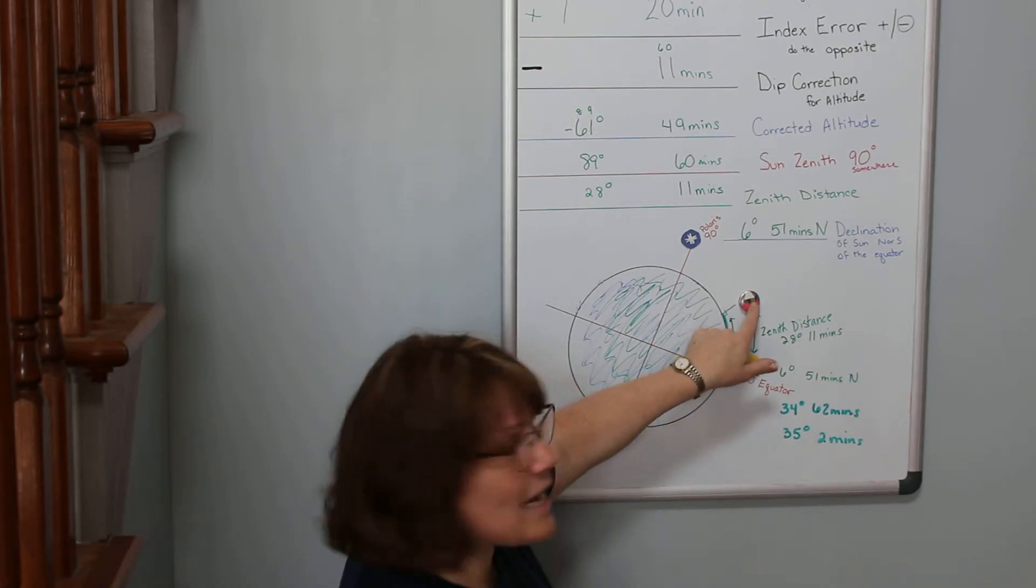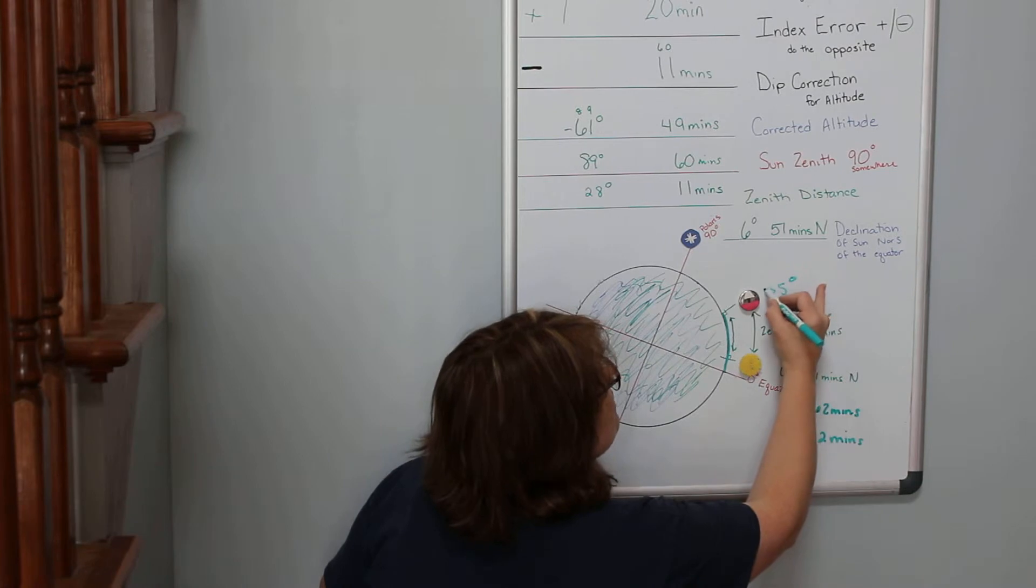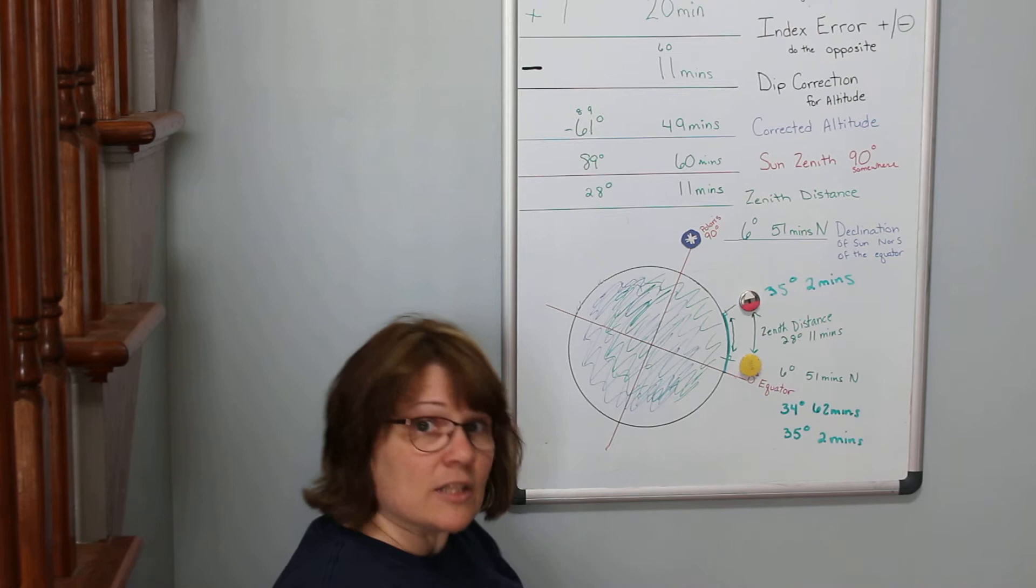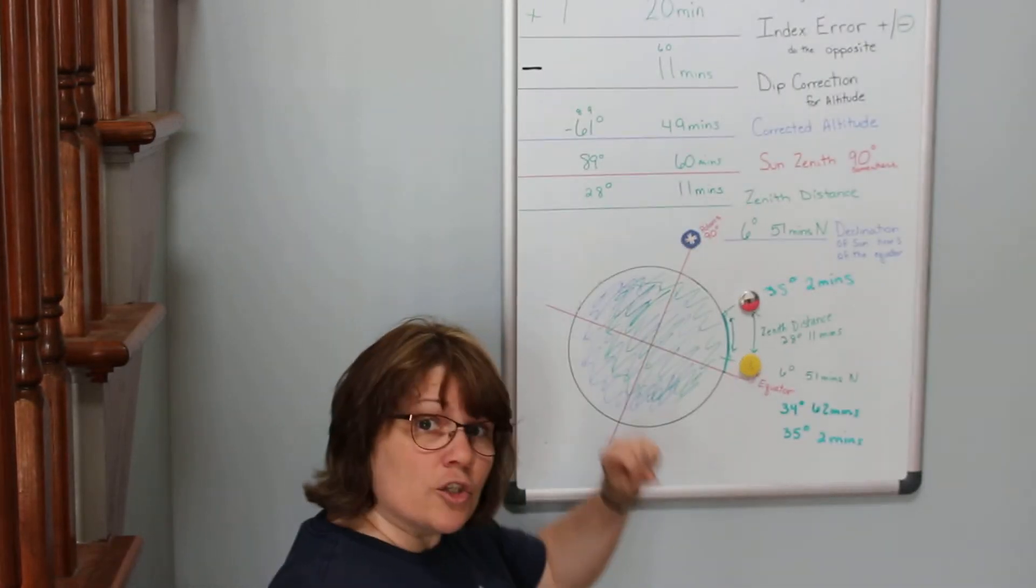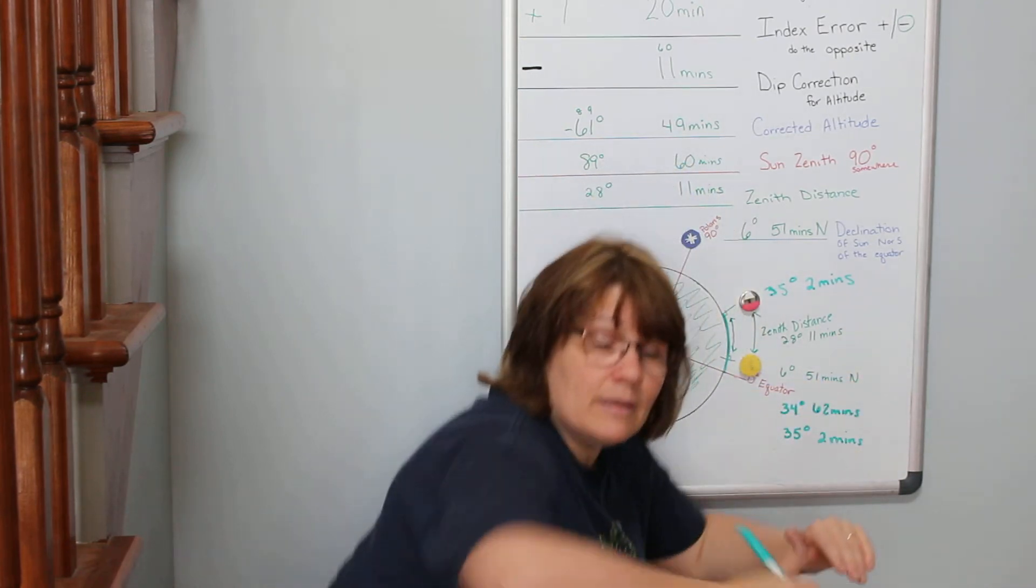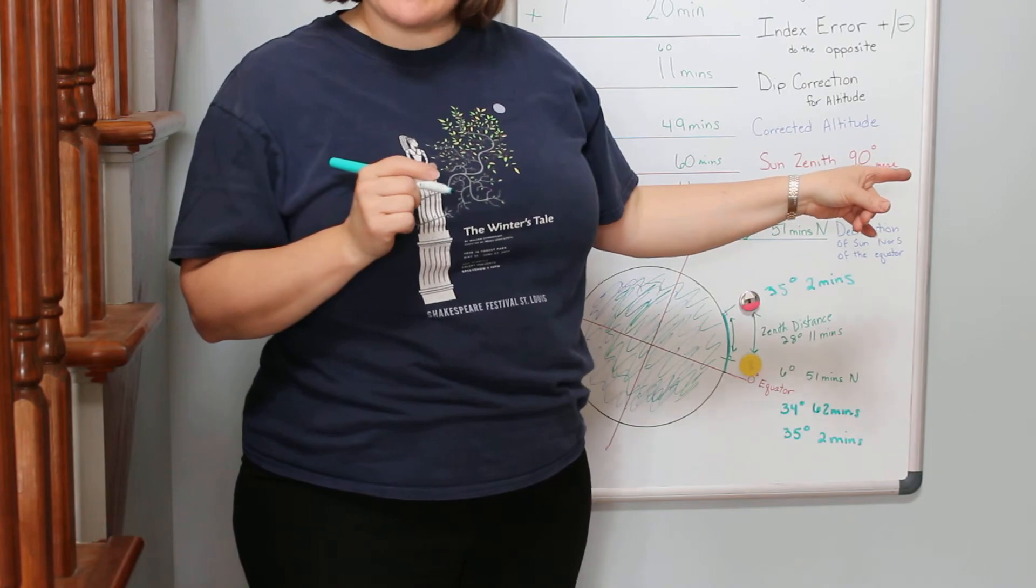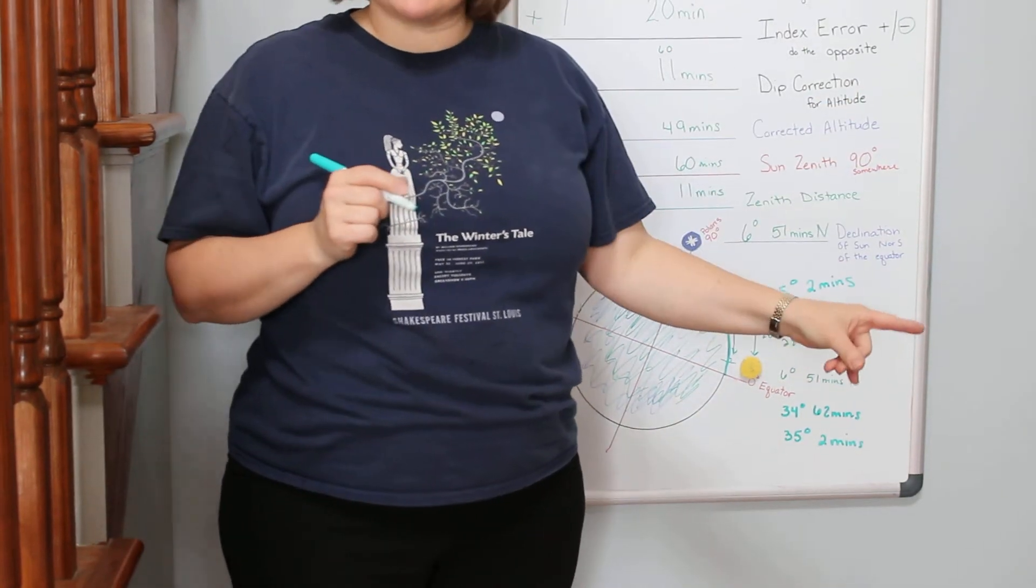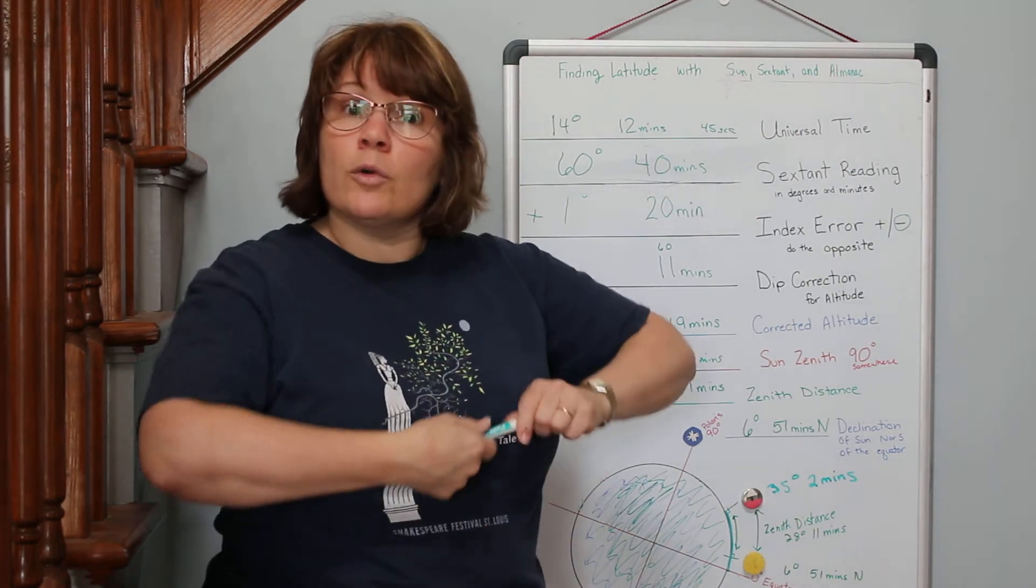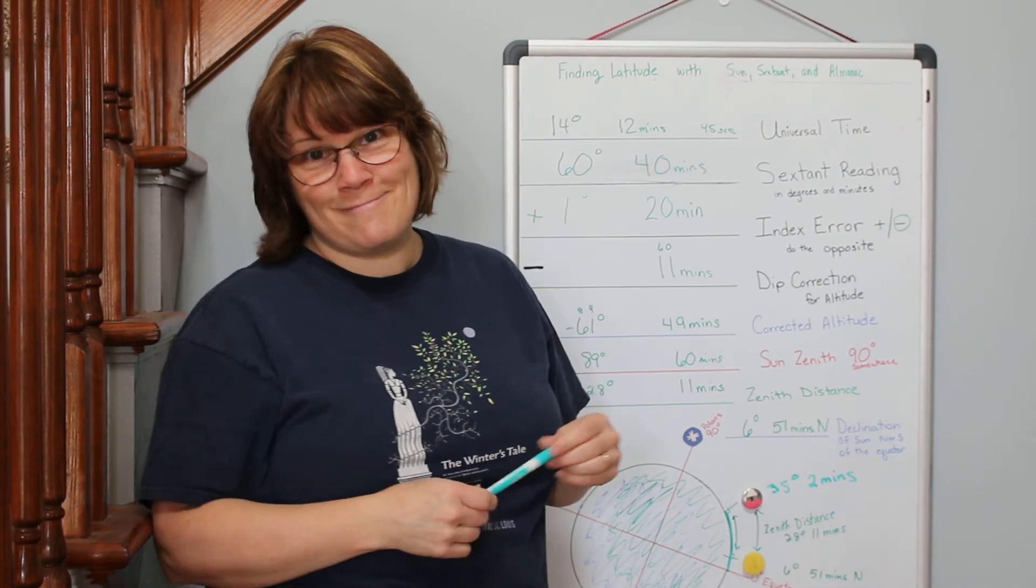My latitude, where I am on the earth right now, is 35 degrees and 2 minutes. That's where I am. I had to do all of these steps to figure that out, and they worked hard. I added, I subtracted, and then I used my nautical almanac, my sextant, and my clock. That was it. That's all I needed. So you can do this at home and I will give you a couple scenarios in just a moment. Thank you, cameraman.